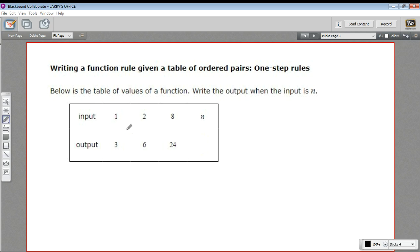So it looks like we're multiplying by three. So when they give us this letter N, this just stands for any number you want. And we're going to write three times N because that's what happens with all of these. We multiply by three. And that is going to be our general rule for the function.